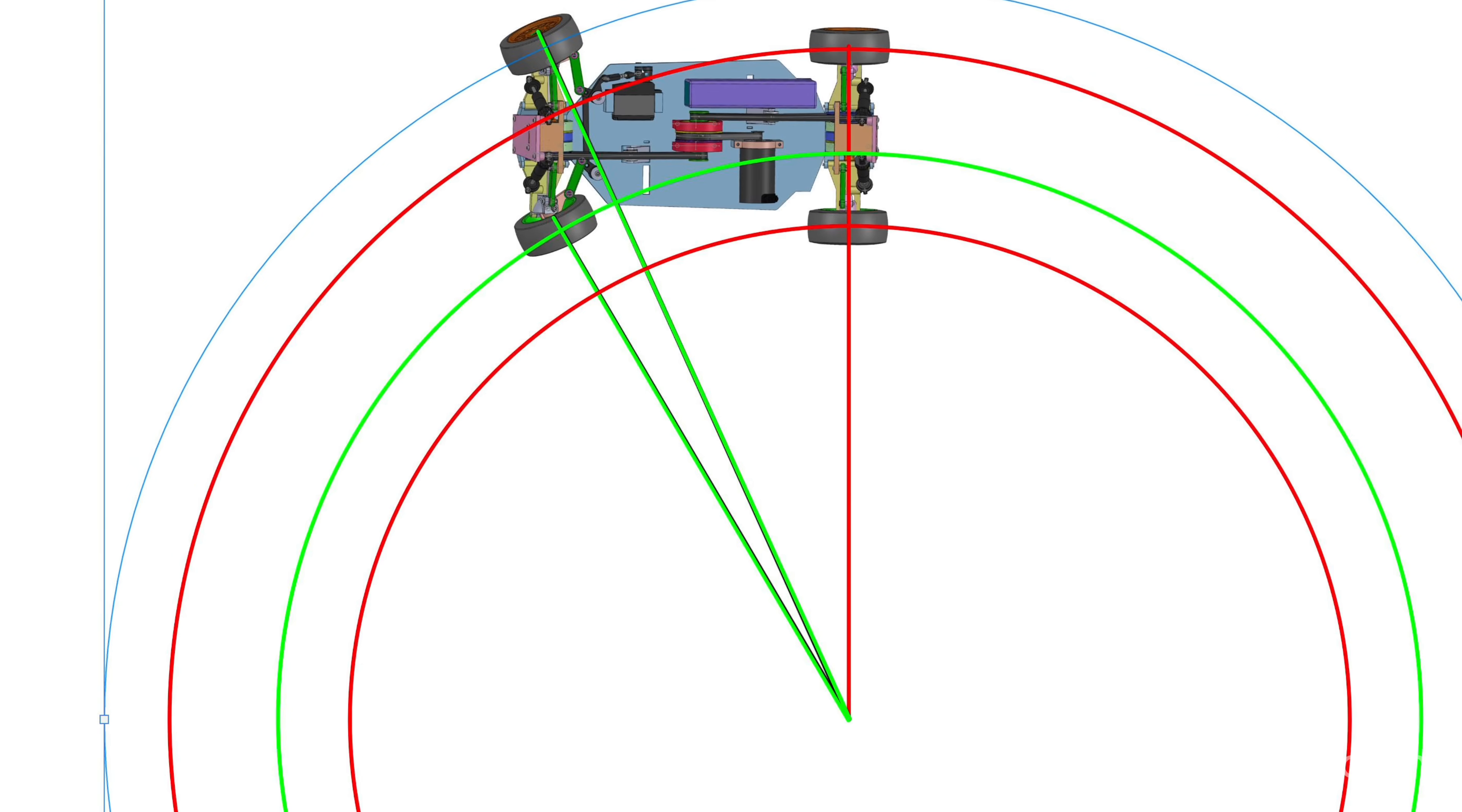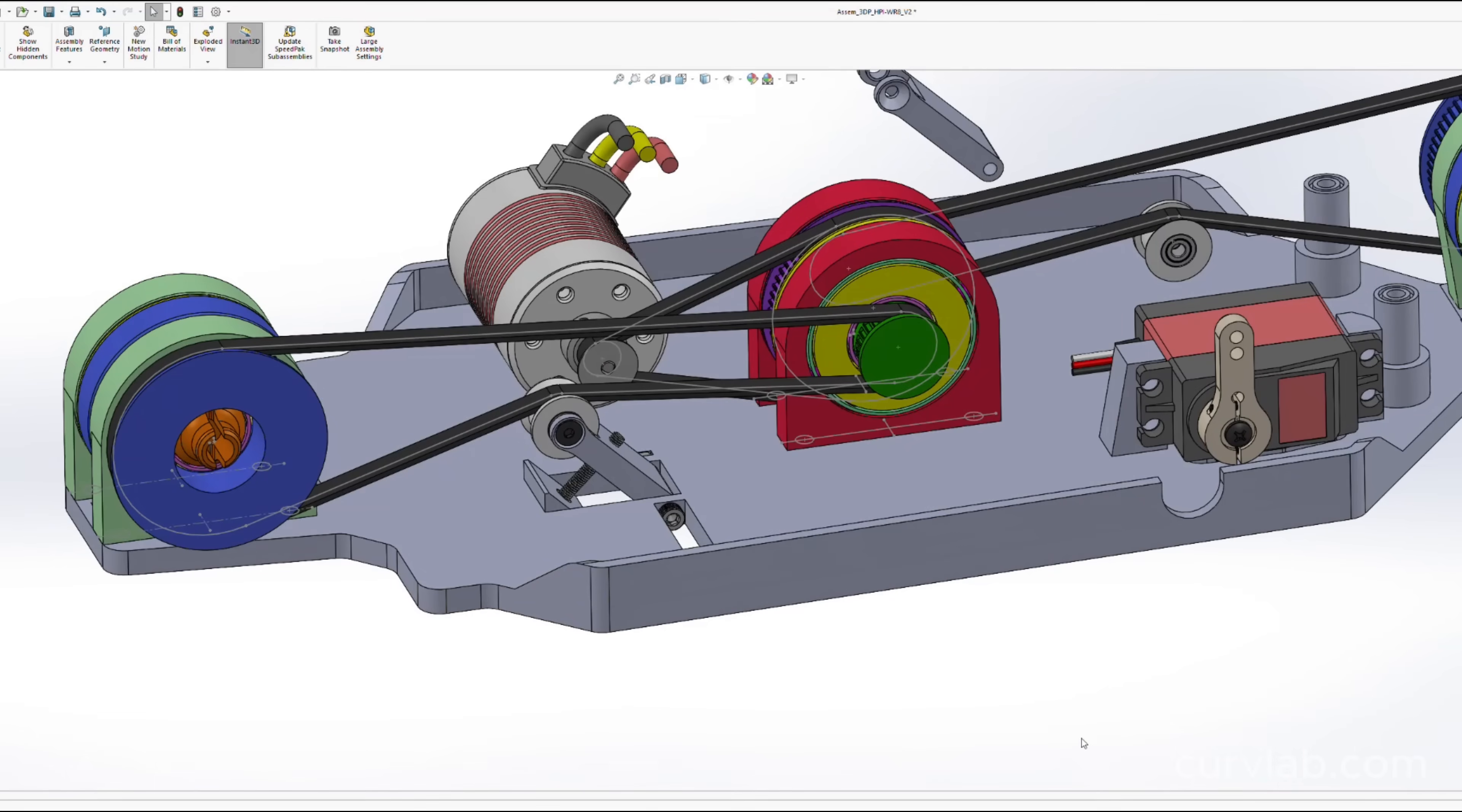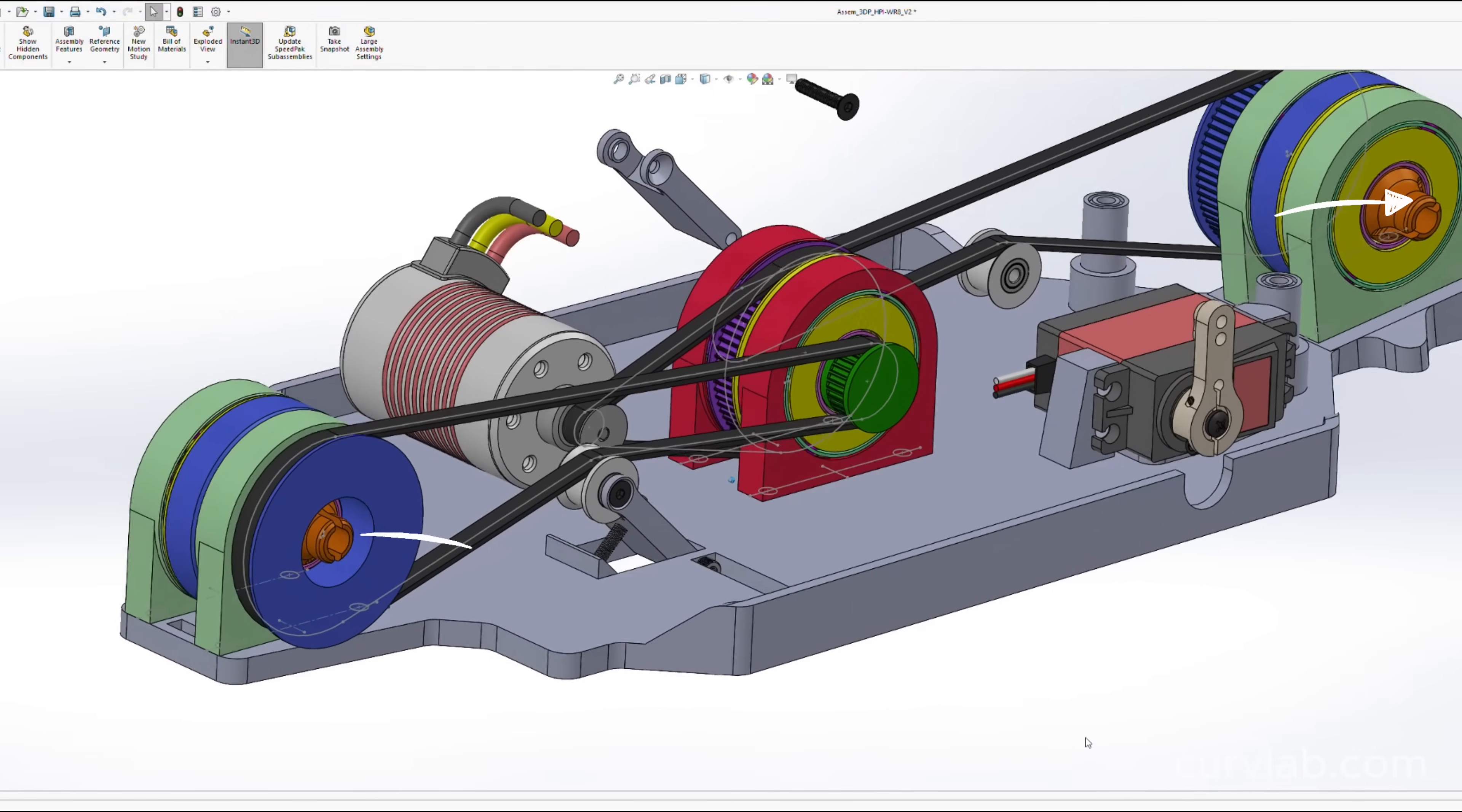The front wheels are traveling a further distance, therefore spinning faster. So not only do we need a front and rear differential to split the power between left and right sides, we need a center differential to split the power between the front wheels and the rear wheels.